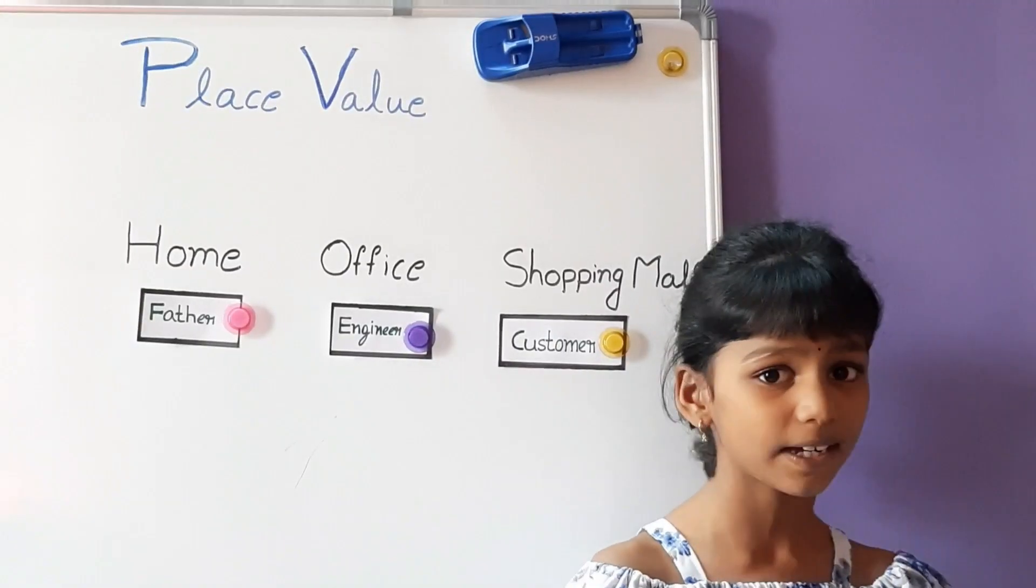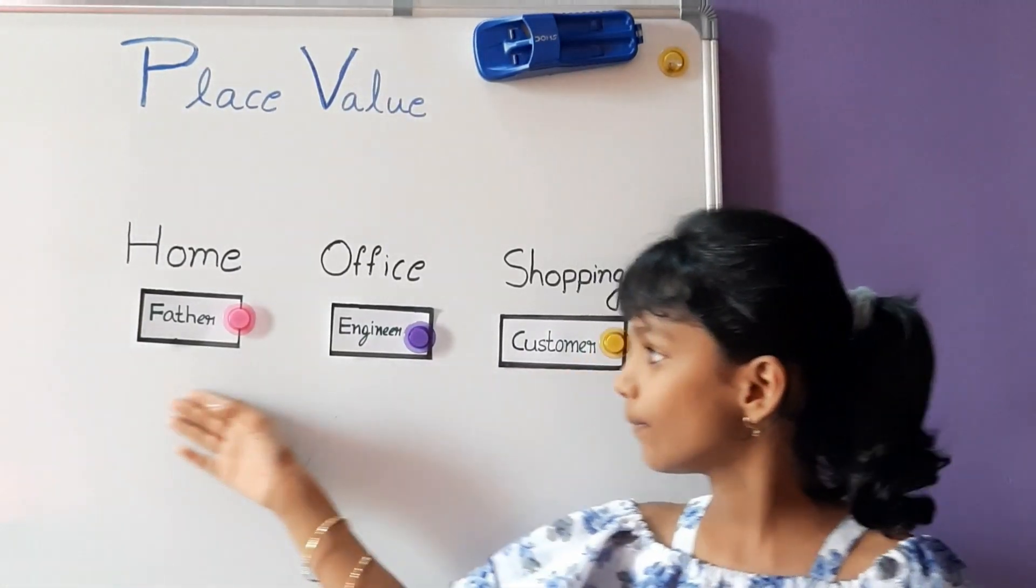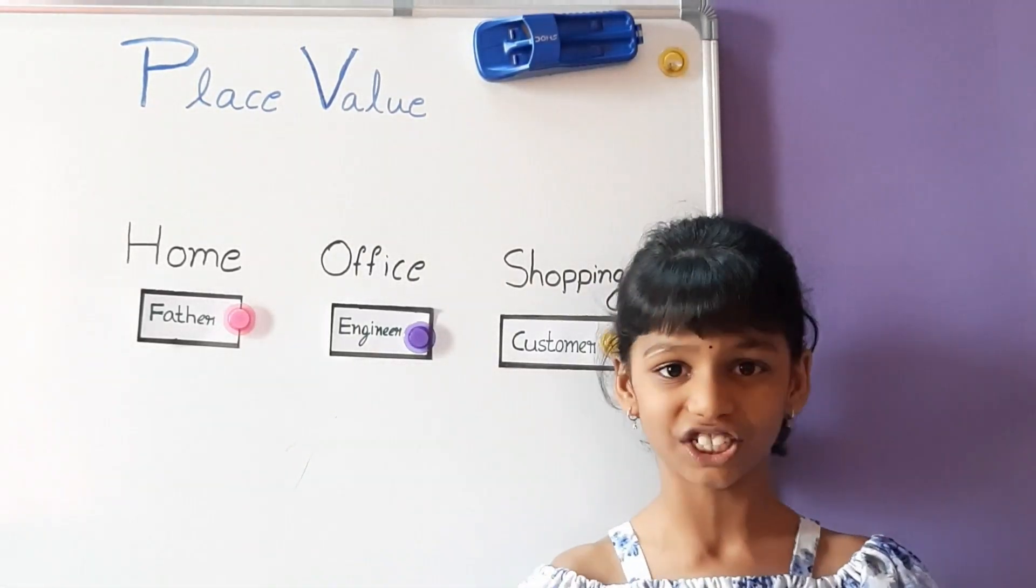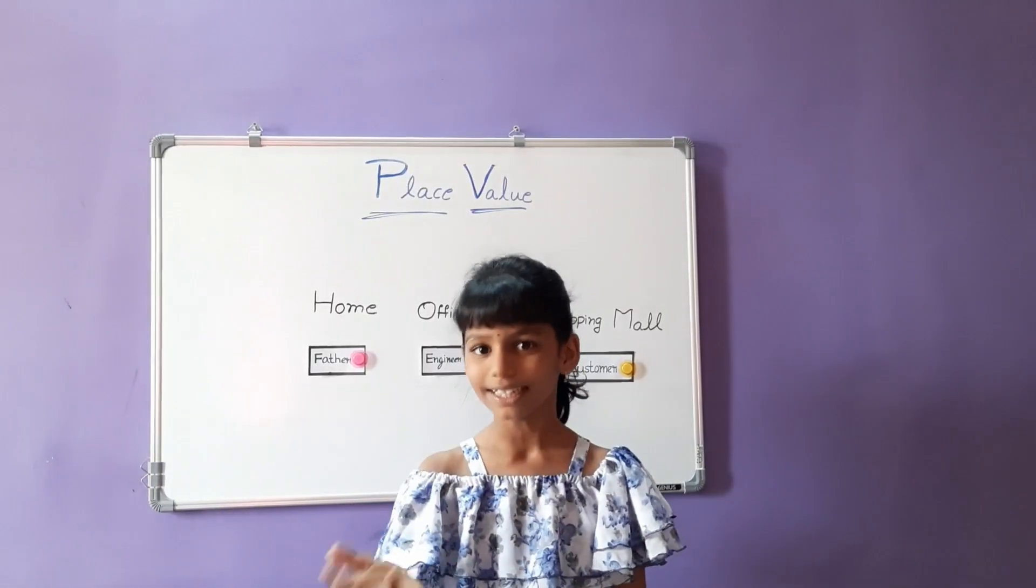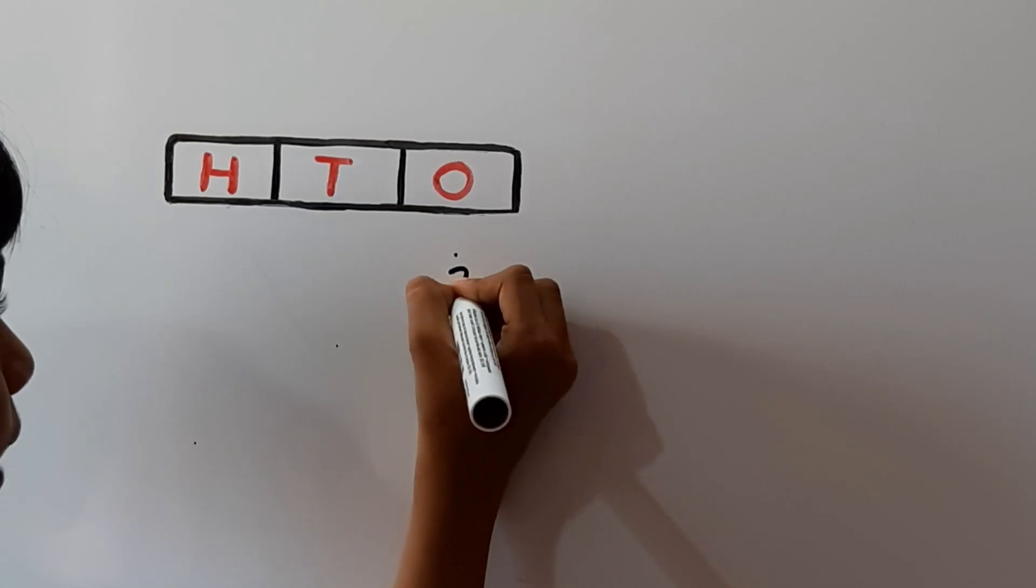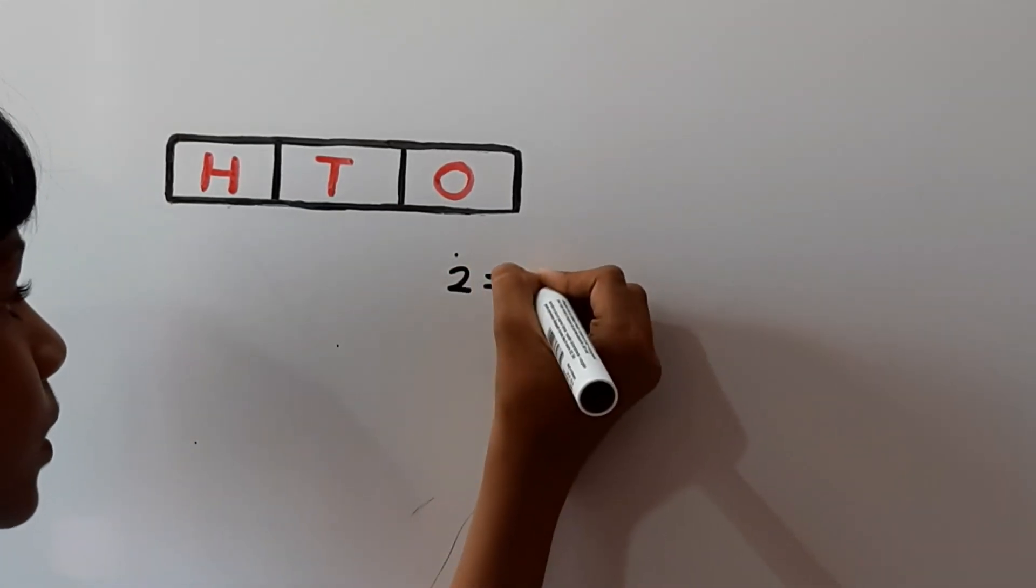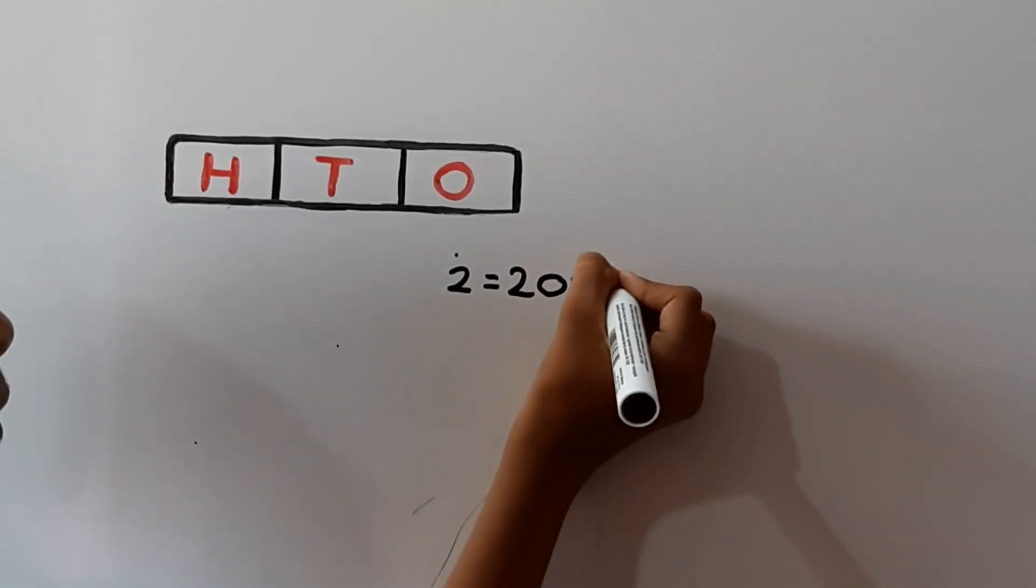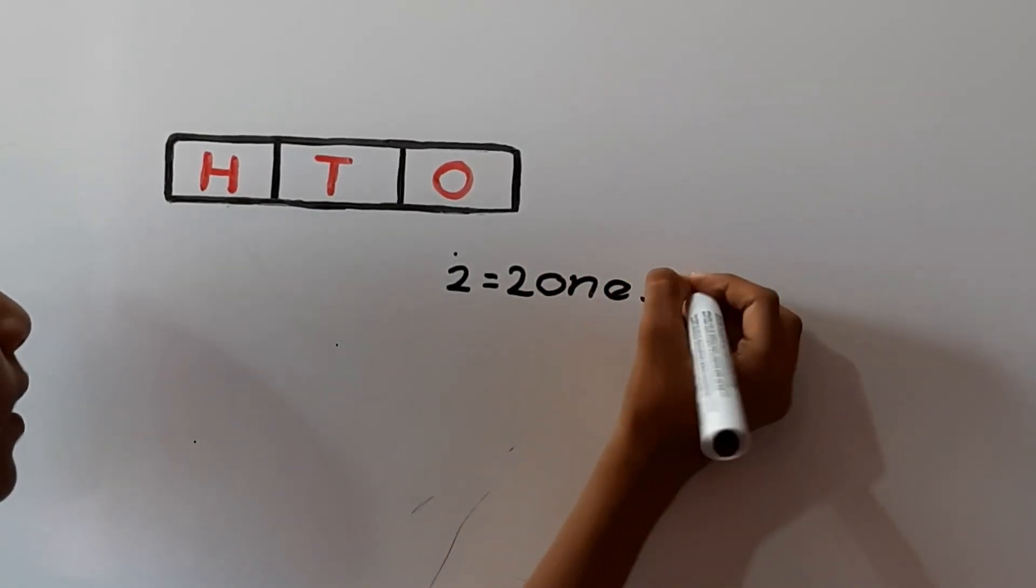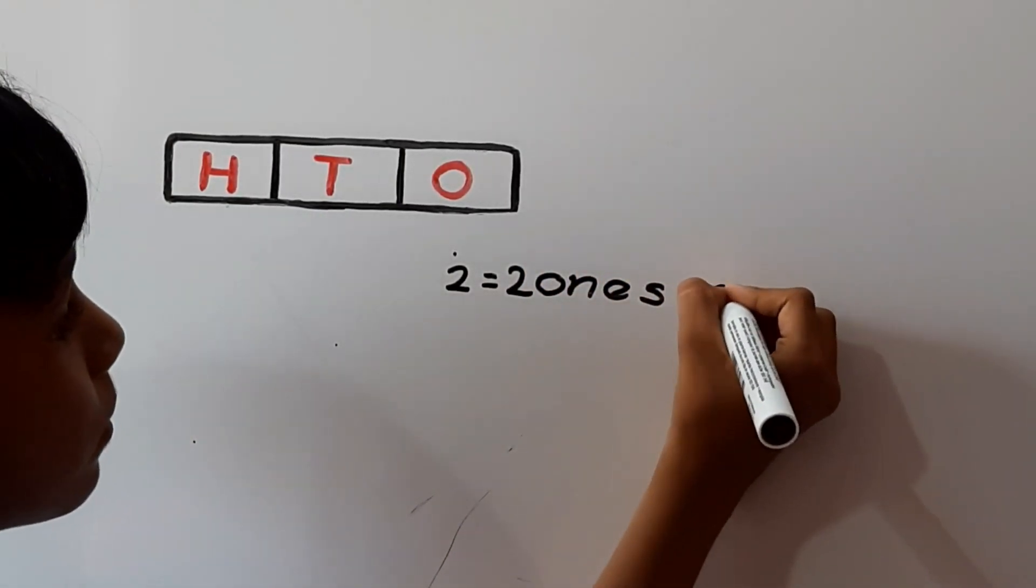So, for the same person having different values as place changes. In the same way, if you keep digit 2 at 1's place, the place value is 2 ones, is equal to 2.